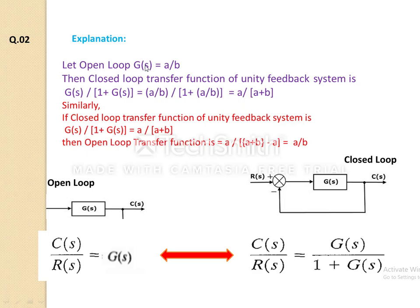To summarize the shortcut: for obtaining a closed-loop transfer function, add the numerator part to the denominator. For obtaining an open-loop transfer function, subtract the numerator part from the denominator. Addition is for closed-loop; subtraction is for open-loop.